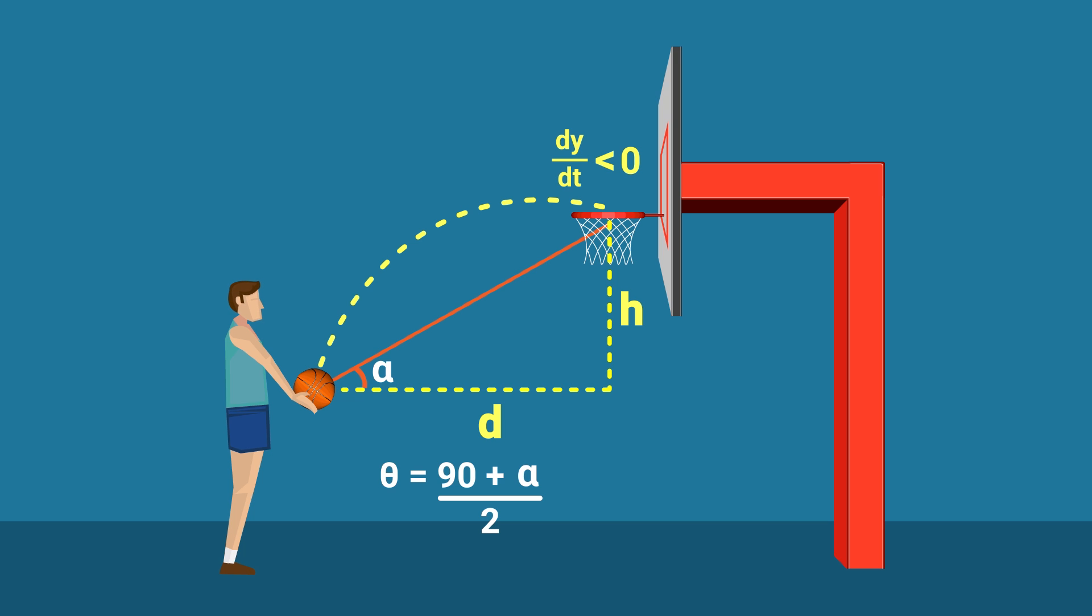So for an average height male shooting from the free throw line, not granny style like this animation, then the resultant angle is roughly 52.4 degrees. This is not the minimum angle, it's just the angle needed for the minimum velocity. The actual velocity, squared in this case, is found with this expression here. So plugging in the numbers for a standard court, we get a speed of 7.62 meters per second.